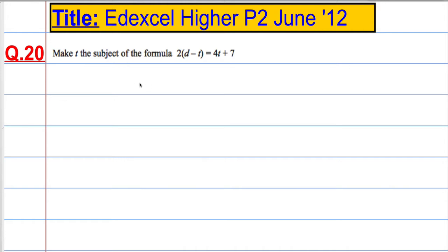So the first thing I'd like to do here is expand this out. So we get 2d minus 2t equals 4t plus 7.